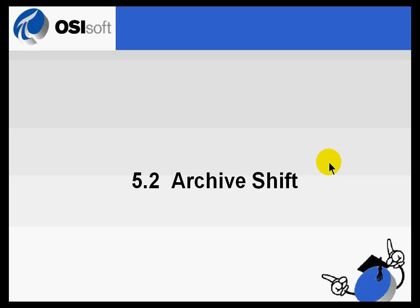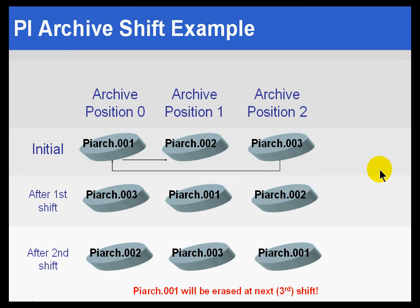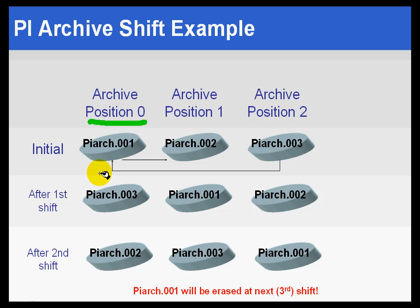Section 5.2, Archive Shift. Here's a graphic depiction of the shifting algorithm. Basically, it works something like this. When this archive, the initial primary archive, which is at position 0, when that archive fills entirely — or fills to 99.8% fill, or if it only has 30 minutes of space left in it — then at that point we will do a shift.